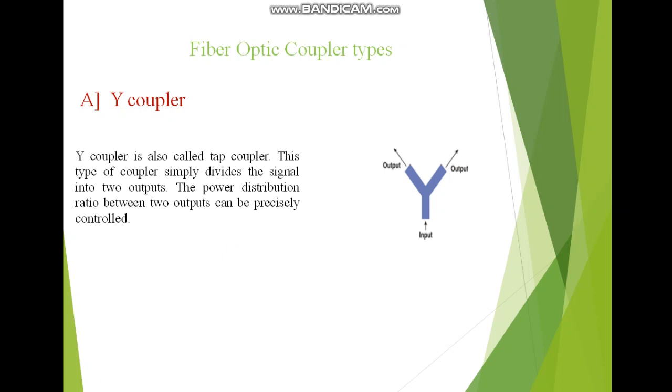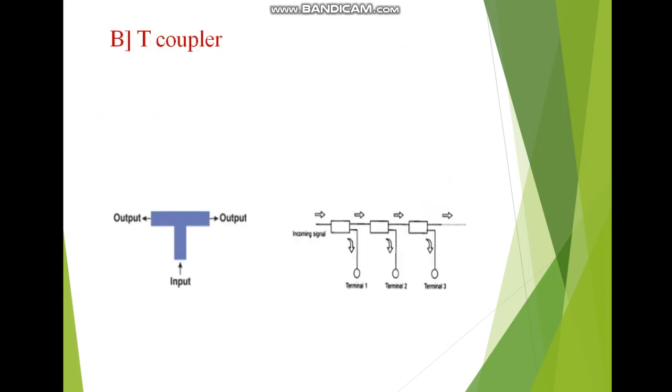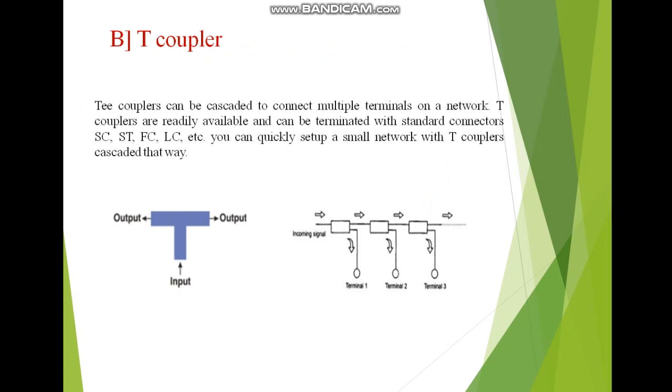Next is my T coupler, shaped like the alphabet T. It is again having one input and two output terminals. The second figure shows that we can cascade to get multiple terminals on a T network. We can connect n number of T networks if we need more output terminals. T couplers are readily available and can be terminated with standard connectors like SC, ST, FC, LC, and you can quickly set up a small network with T couplers.